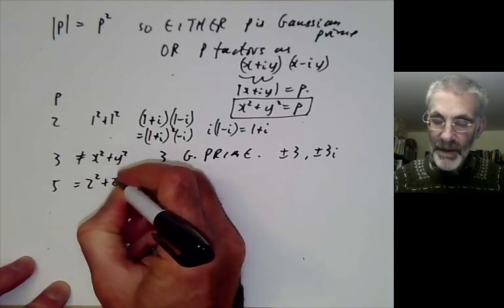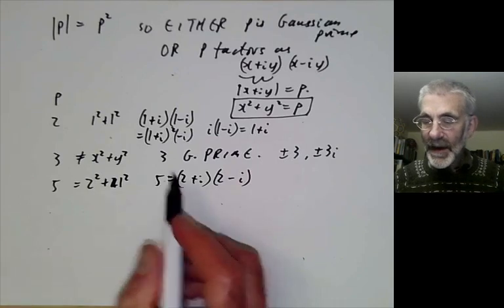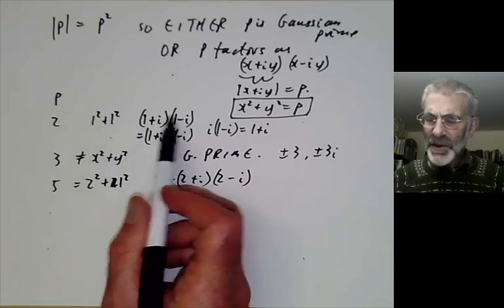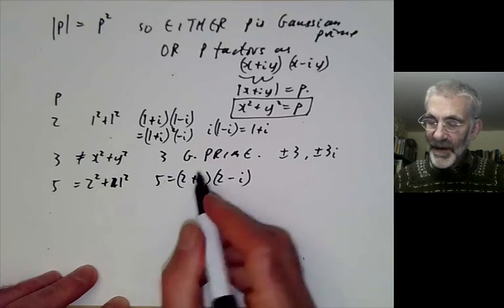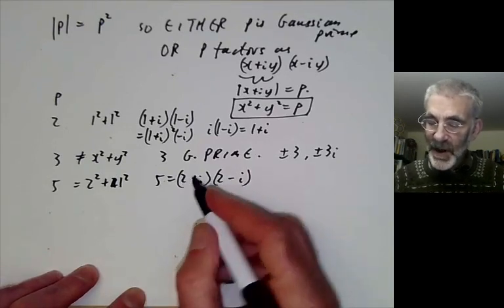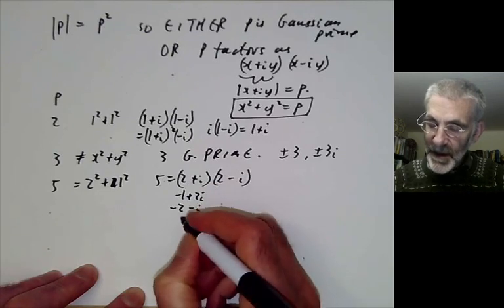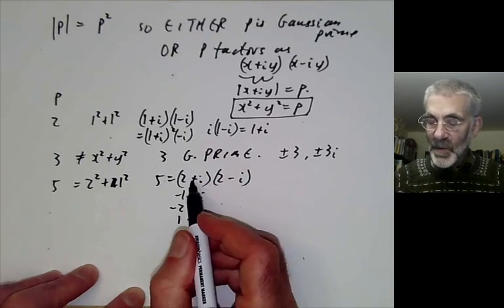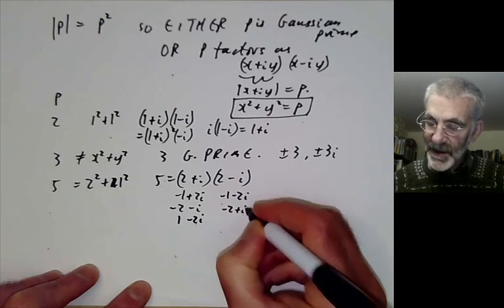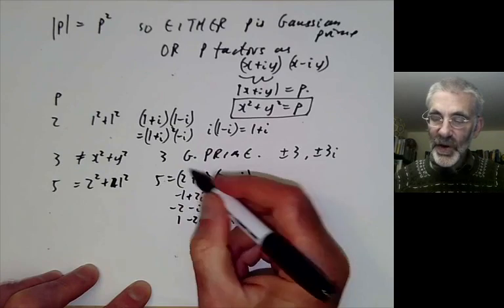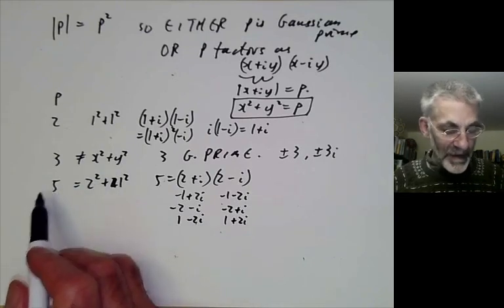5 can be written as a sum of two squares: 5 equals (2 plus i)(2 minus i). In contrast to the case of 2, these two primes are really different — they're not unit multiples of each other. Each comes as a cluster of four primes by multiplying by units. From (2 plus i) we get: minus 1 plus 2i, minus 2 minus i, and 1 minus 2i. From (2 minus i) we get: minus 1 minus 2i, minus 2 plus i, and 1 plus 2i. So there are eight primes dividing 5 in two groups of four.